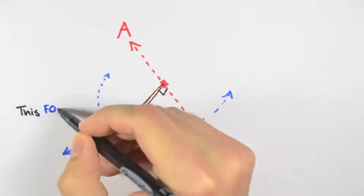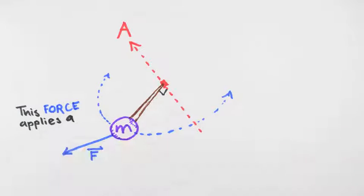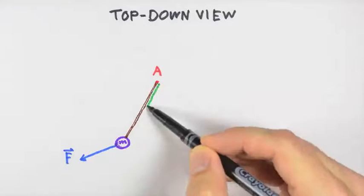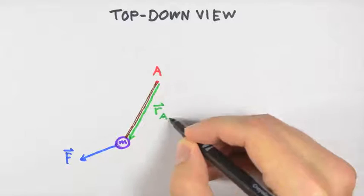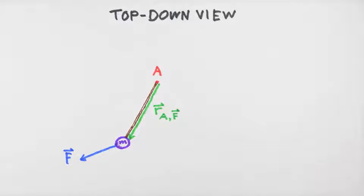Intuitively you might expect this force applies a kind of twist to the system. Exactly what that twist is depends not only on the force itself but also on the choice of axis for the system. The way we connect the axis to the force is by means of the position vector r sub a F that locates where F is applied relative to the axis A.